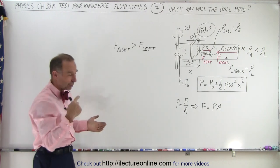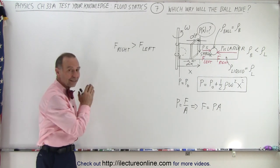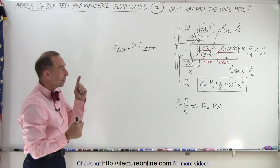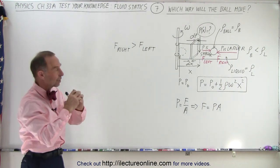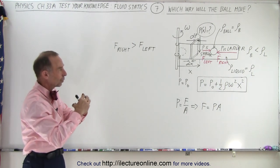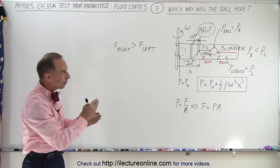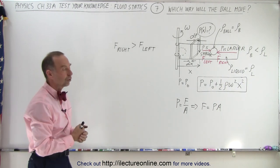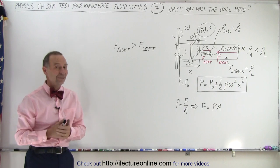It's kind of counterintuitive because we think as we spin around that things will get pushed to the right, but not in the case where I have an object like a ball that has a smaller or lower density than the density of the liquid. The ball will then get pushed to the left, and that is how we know.